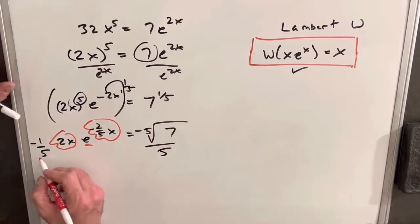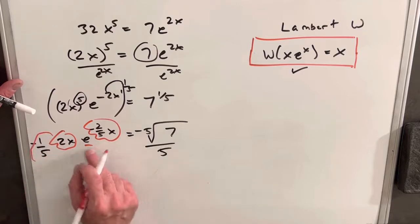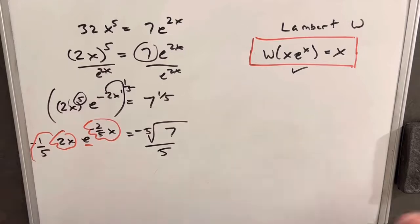And then at this point, what you'll notice is, when we multiply this minus 1/5th in, we're identical here. We've got minus 2/5ths here, minus 2/5ths here, x, x, e. And then we can use our Lambert W function. So let's apply that now.